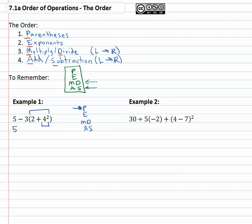Everything else stays the same, it's still 5 minus 3 times 2 plus, but now instead of 4 squared it's 16. Continuing in the order of operations we do the addition inside the parentheses, because the parentheses must be completed before anything else. 5 minus 3 times 2 plus 16 is 18.